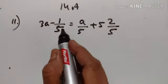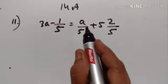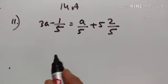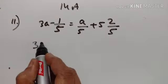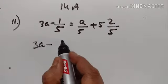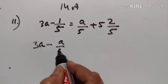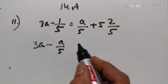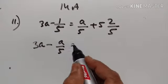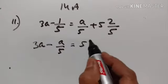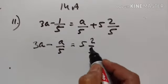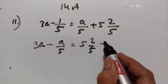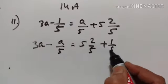The equation is: 3A minus 1 upon 5 is equal to A upon 5 plus 5 and 2 upon 5. Transposing, 3A minus A upon 5 plus A upon 5 — which becomes minus when transposed — is equal to 5 and 2 upon 5 minus 1 upon 5, which becomes plus 1 upon 5.